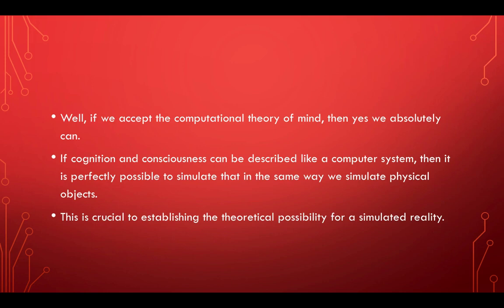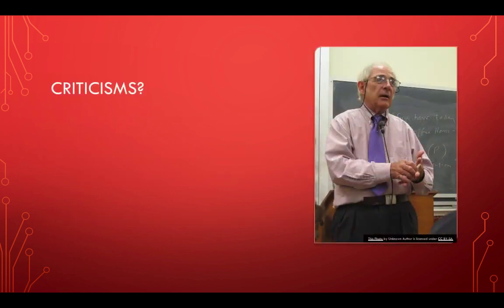So it's crucial for establishing the theoretical possibility of a simulated reality. What started out as possibly the main criticism of the simulation argument can be shown to be false — not entirely convincing — when we accept the computational theory of mind. All we've got to do now is accept the computational theory of mind. And that's where we start looking at the criticisms. One main criticism comes from John Searle.